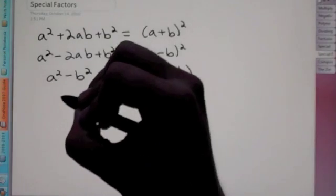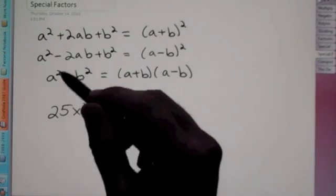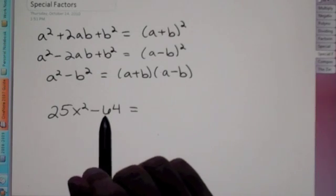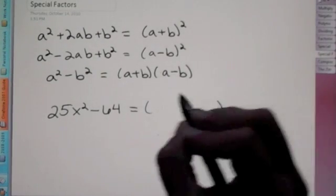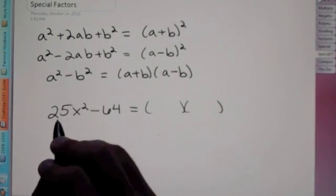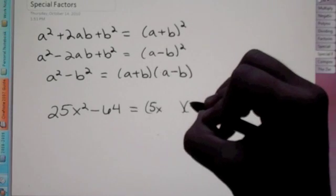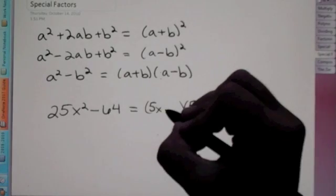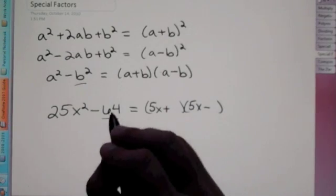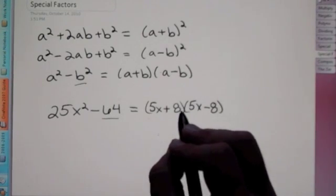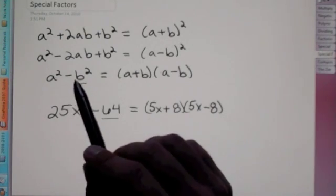Let's try a problem. If I give you 25x squared minus 64, figure out which format this matches. I only see two terms with a minus in between, so it matches a squared minus b squared. Take the square root of the first term: the square root of 25x squared is 5x. The square root of 64 is 8. So the final answer is (5x + 8)(5x - 8).